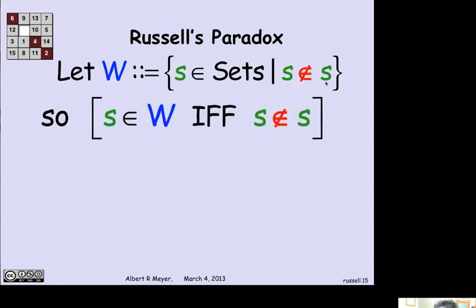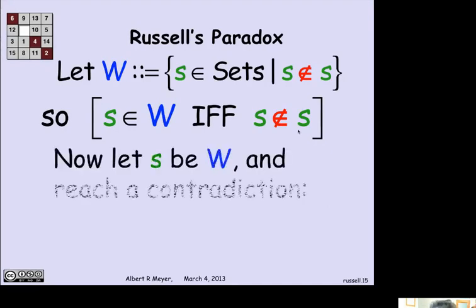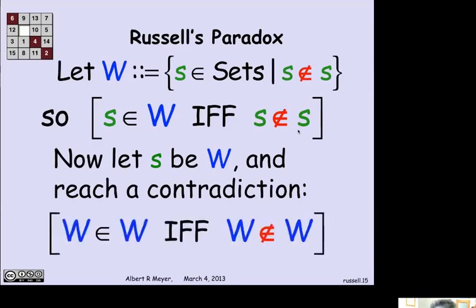The problem was that Russell came along and looked at Frege's set theory and came up with the following paradox. He defined W to be the collection of S in sets such that S is not a member of S. Frege would certainly have said that's a well-defined set and he will acknowledge that W is a set. And let's look at what this means. And I mean, this is a diagonal argument. So let's remember, by this definition of W, what we have is that a set S is in W if and only if S is not a member of S. OK. That's fine. Then just let S be W. And we immediately get a contradiction that W is in W if and only if W is not in W.